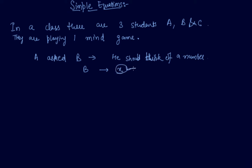He doesn't tell to anybody what he thought. Then A asked him, asked him means B, to multiply this number, the number which B has thought, by 10. Then A asked him, but A doesn't know about the number.